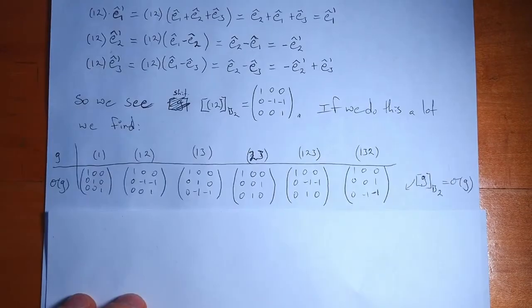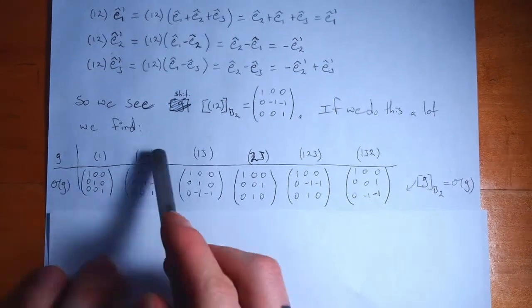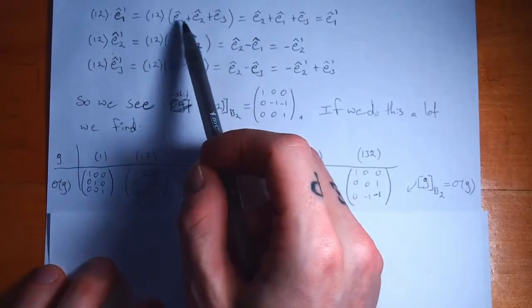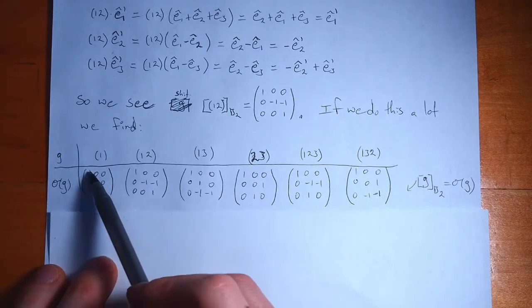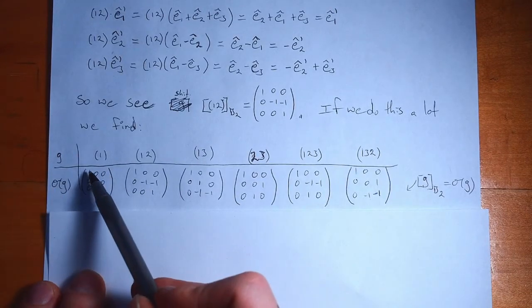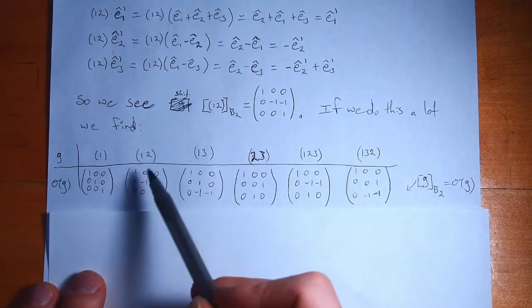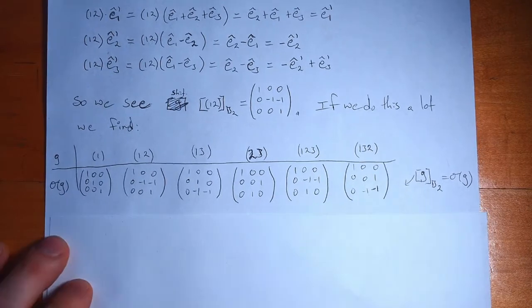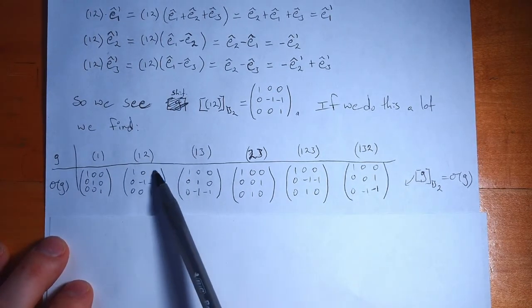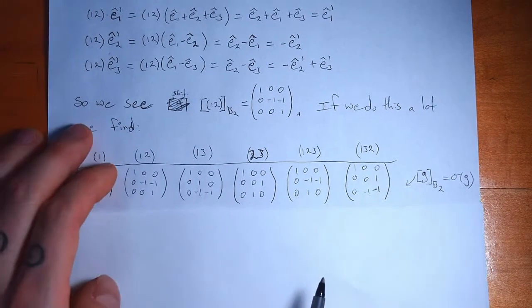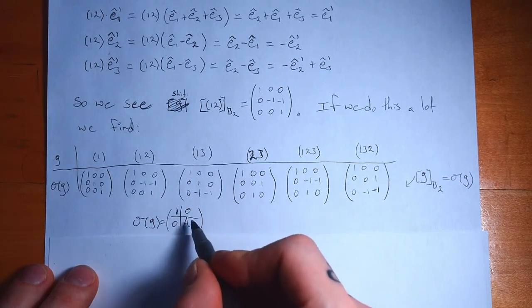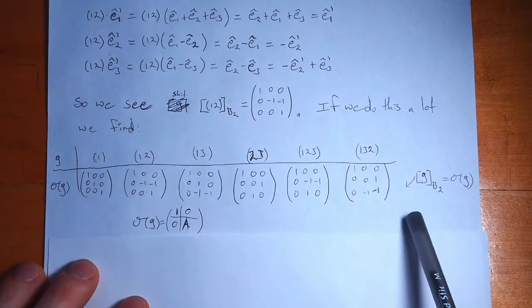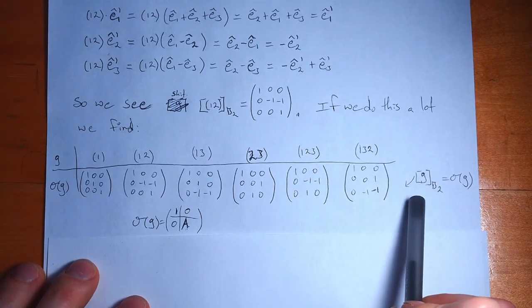Doing this for all group elements, we find an interesting structure: the action of every element always sends our first basis vector e_1' back to itself, because it's just the sum of e_1, e_2, e_3, and no matter how you scramble 1, 2, 3, e_1' always gets sent back to itself. So for all group elements we have a 1 in the top-left corner, and 0s in the top row since nothing maps to e_1. Our entire representation lives in the lower 2×2 block. We've reduced from needing a full 3×3 matrix to only needing a 2×2 matrix.